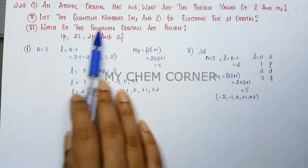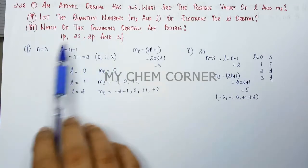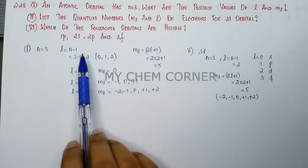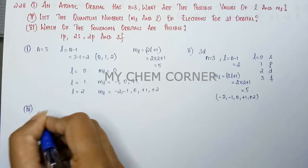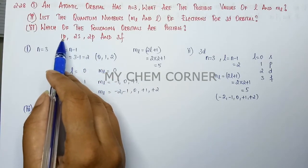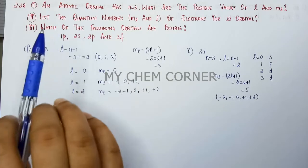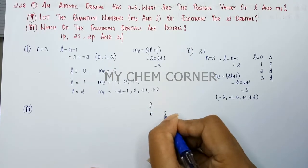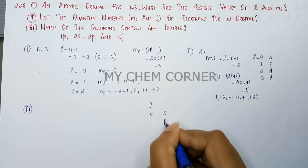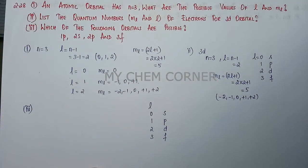The next question asks which of the following orbitals are possible: 1p, 2s, 2p, and 3f. The key rule is: l equal to 0 is s, l equal to 1 is p, l equal to 2 is d, and l equal to 3 is f. For each orbital we check whether the l value is less than n, since l ranges from 0 to n minus 1.